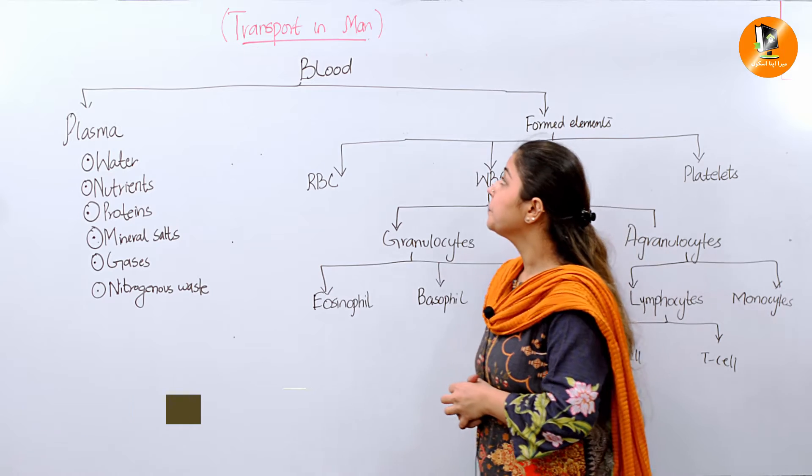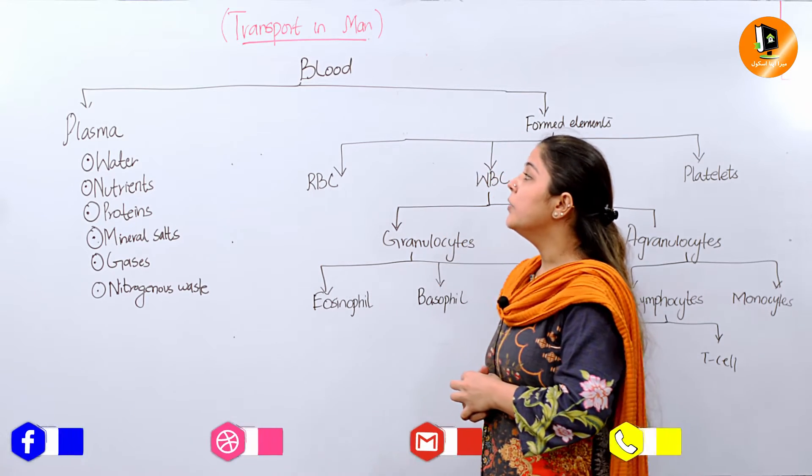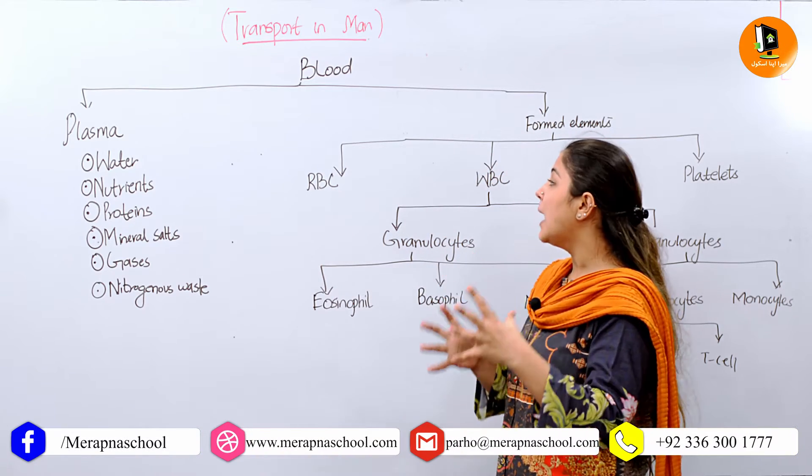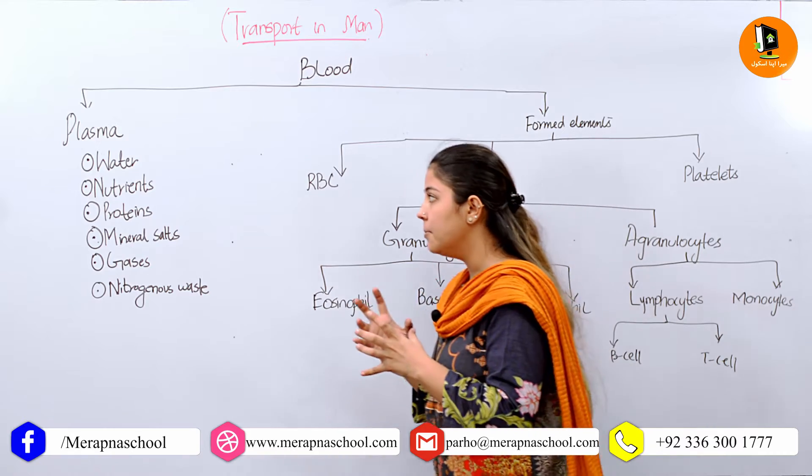The first division of blood is plasma and the formed elements.